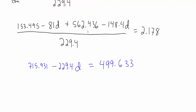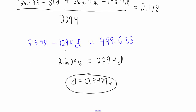So 153.495 plus 562.436 is 715.931, and negative 81d minus 148.4d is negative 229.4d. Then 229.4 times 2.178 is 499.633. Taking negative 229.4d to the other side and subtracting 499.633 to the left-hand side, we have 216.298 equals 229.4 times d, giving us d equals 0.9429 meters. So Juliet moving to the right side of the boat caused the boat to shift almost one meter in the water.